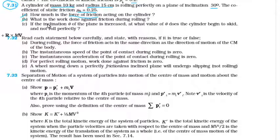In part B we have to find the work done against friction during rolling. And part C: if the inclination theta of the plane is increased, at what value of theta does the cylinder begin to skid and not roll perfectly? These are the three questions. Let us see the solution.